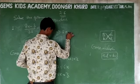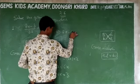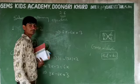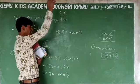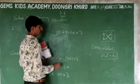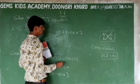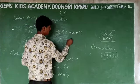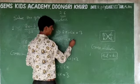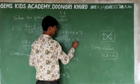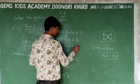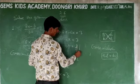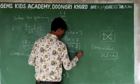8x minus 6x equals 3. Simplifying, 2x equals 3, so x equals 3 upon 2. That is the solution to the first question.